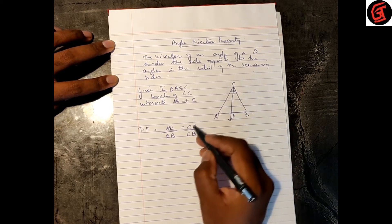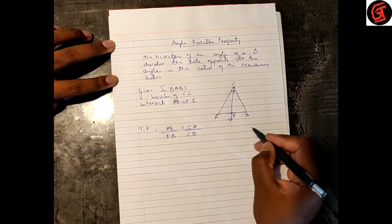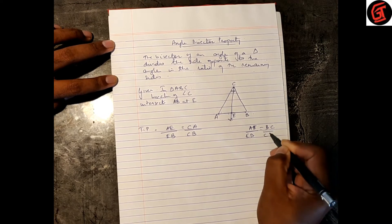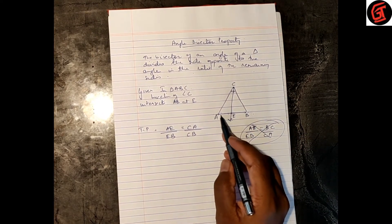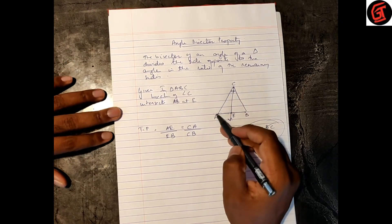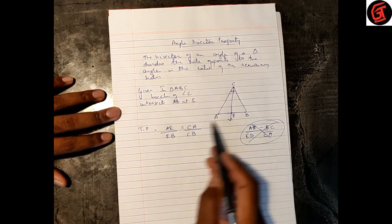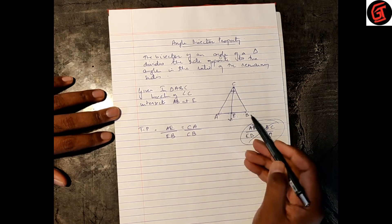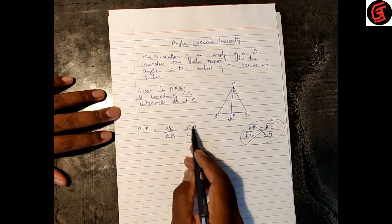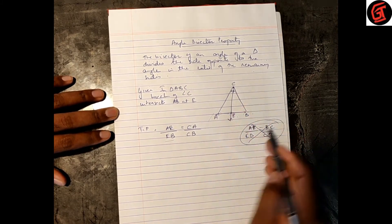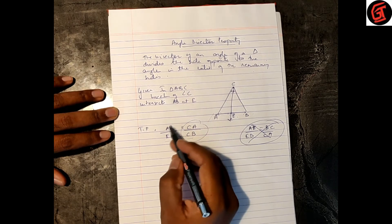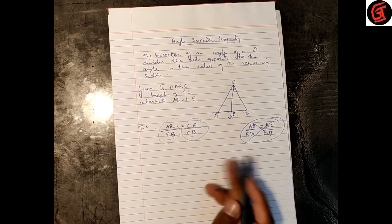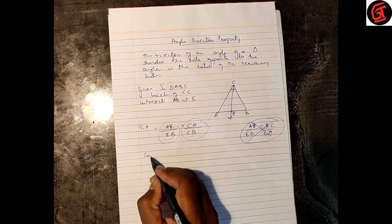Be careful with ratios. If you write AE upon EB on the left side, you cannot write BC upon CA on the right side — that would be wrong. You must match: left side to left side, right side to right side. So AE upon EB must equal AC upon BC, not the reverse.